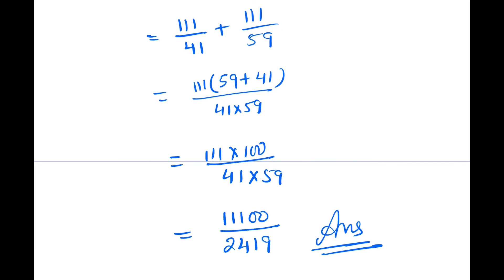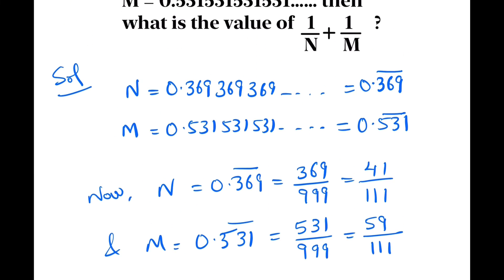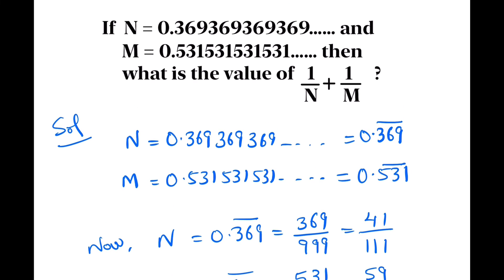So 1 upon N plus 1 upon M equals 11100 upon 2419. So this is our answer: 11100 upon 2419.